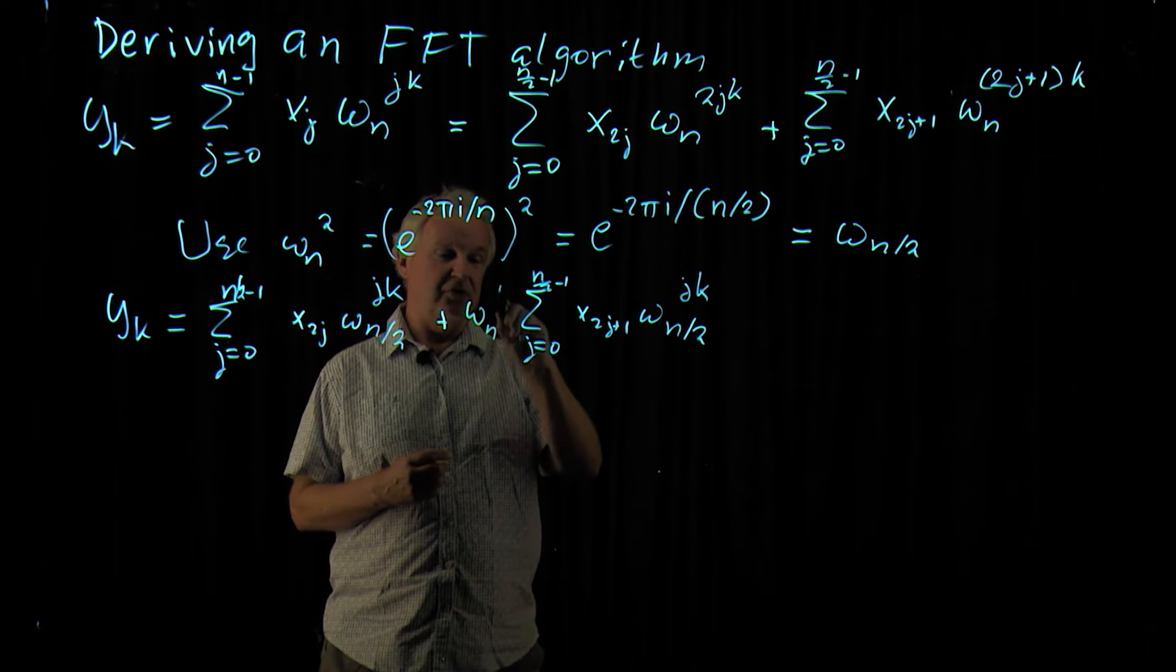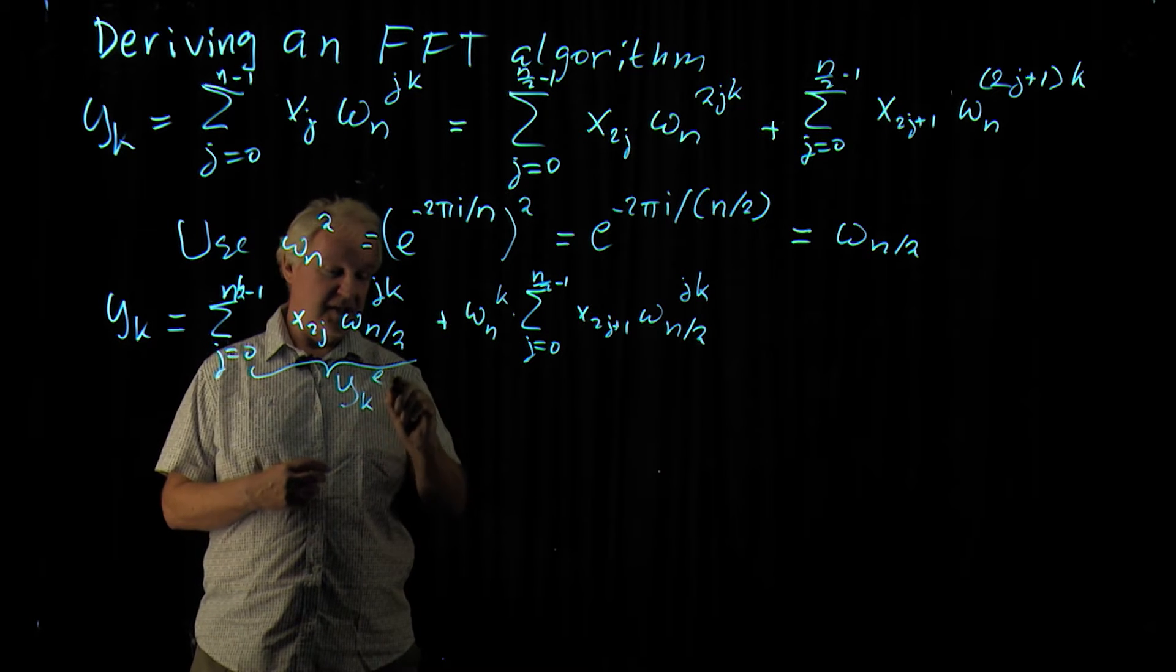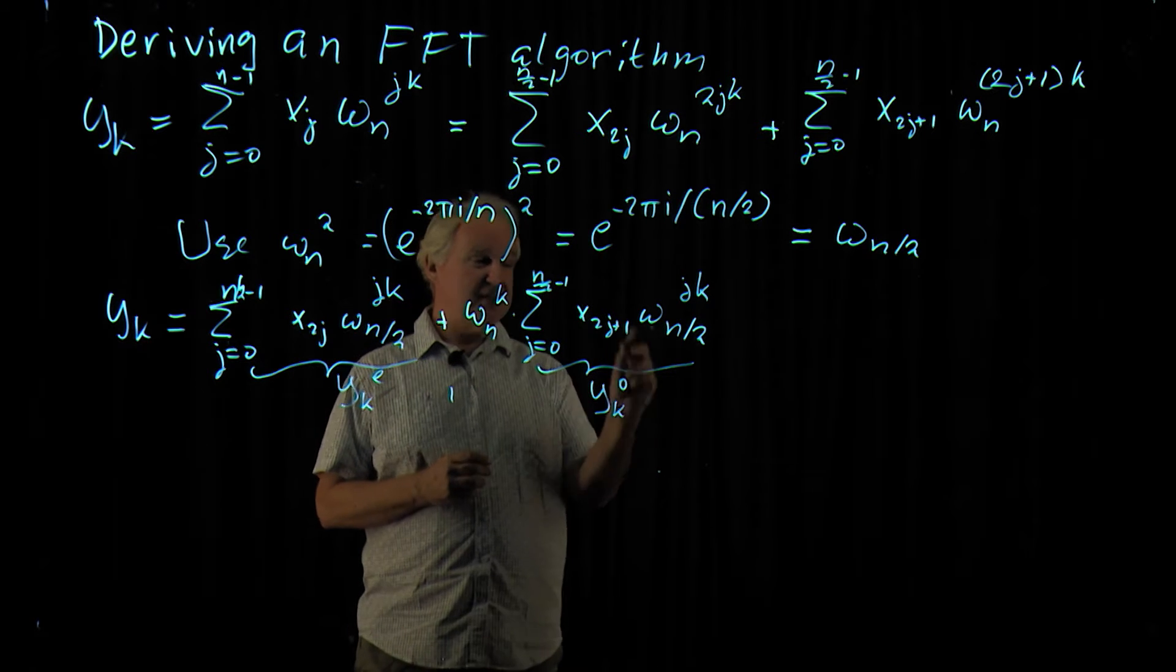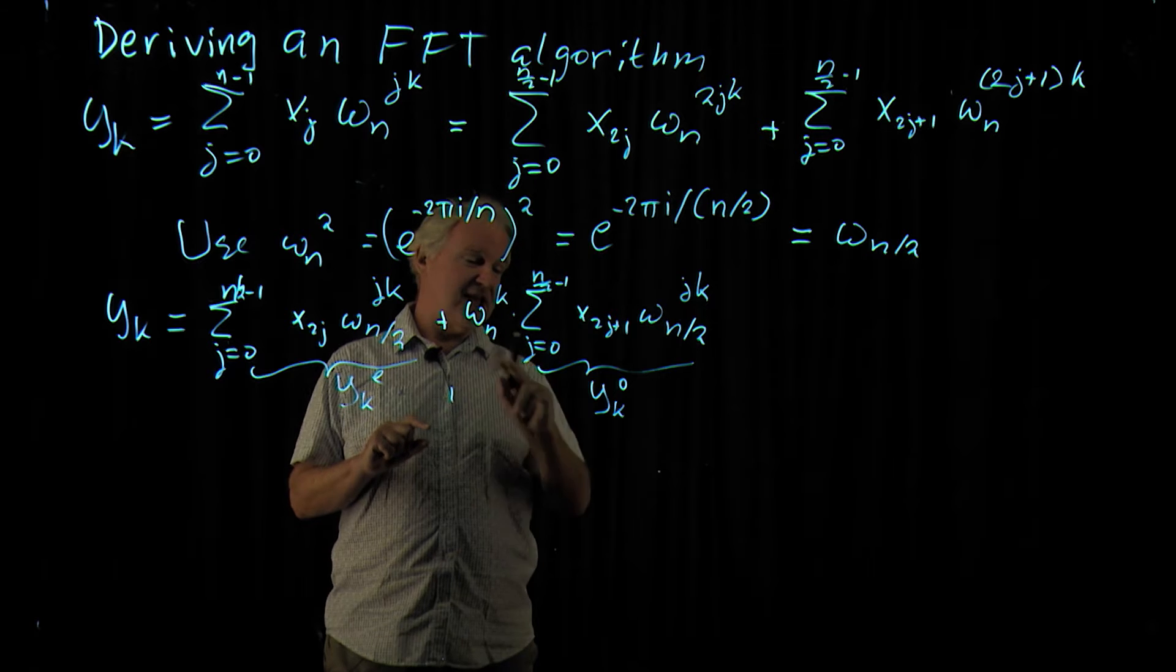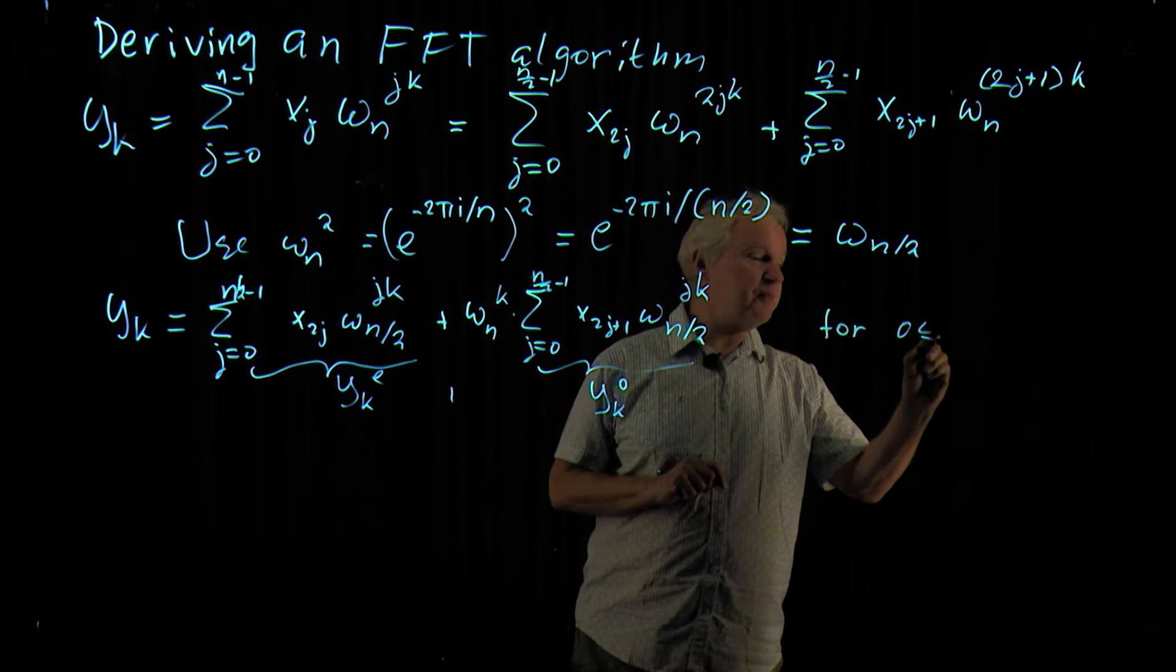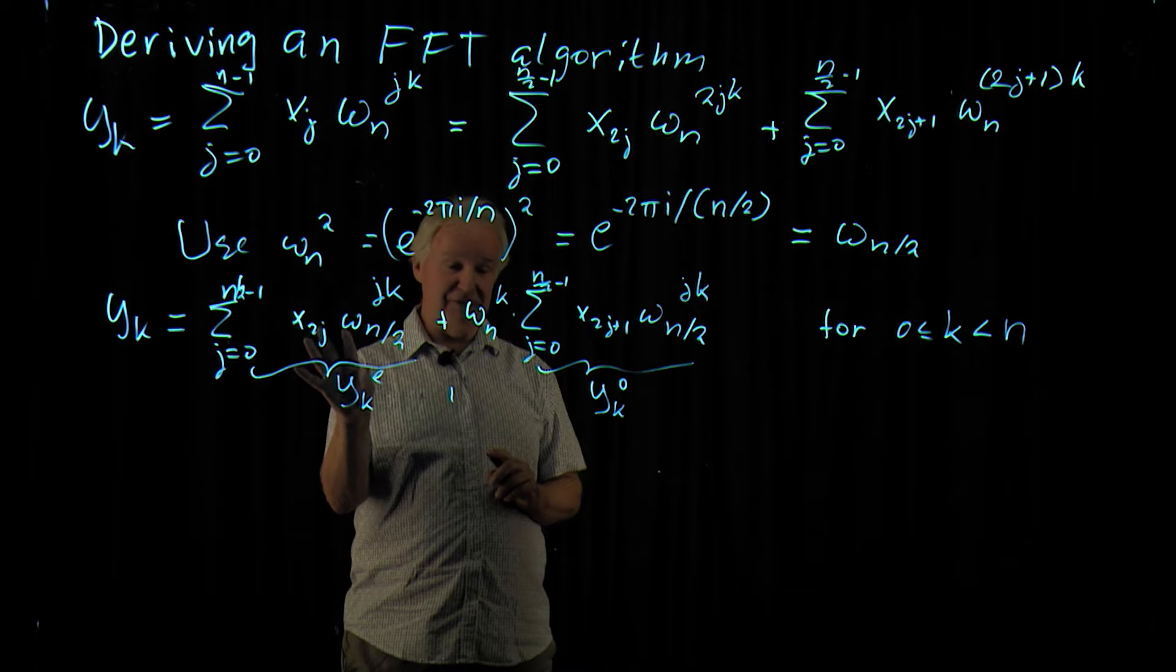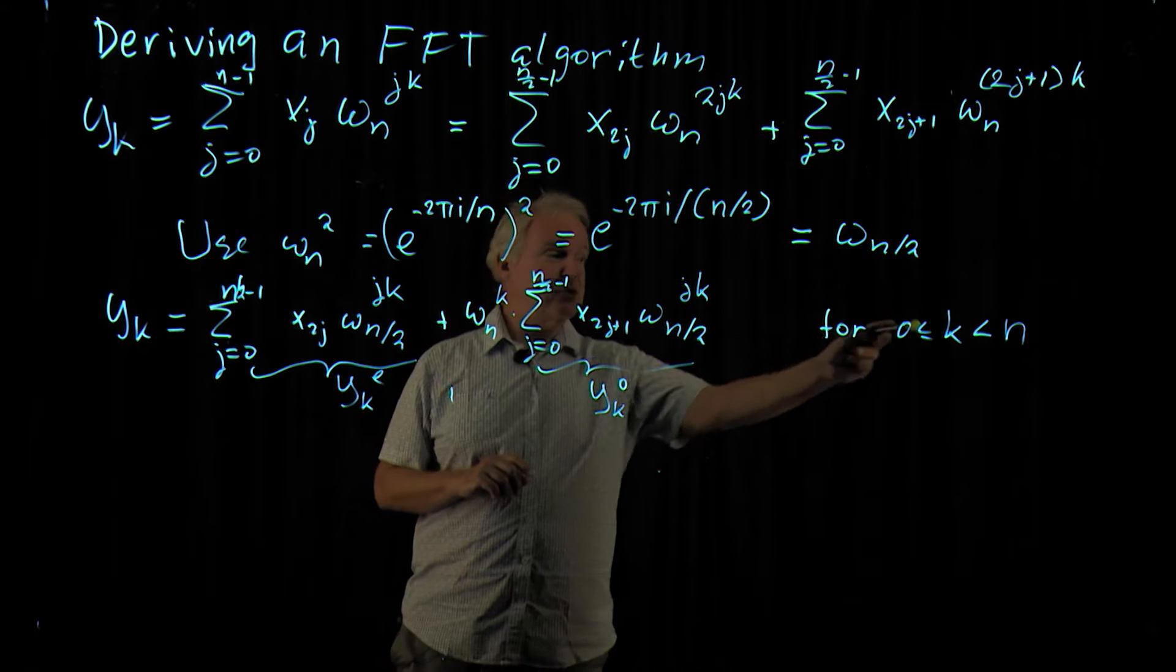So we write omega_n to the power k. And this, we call y_k even, and this we call y_k odd. So we have written our Fourier transformation as a sum of an even and omega_n times an odd term. And this holds for 0 less than k less than n.